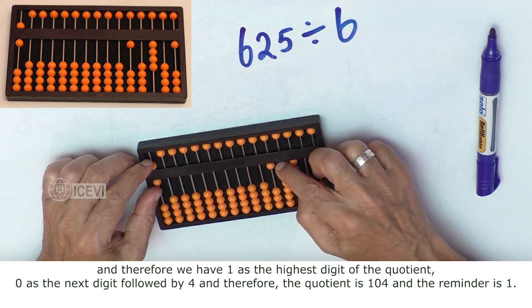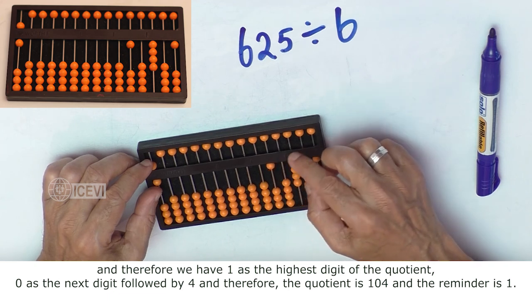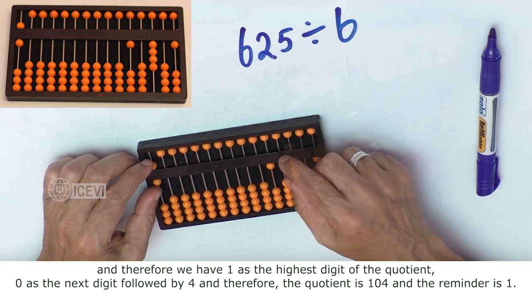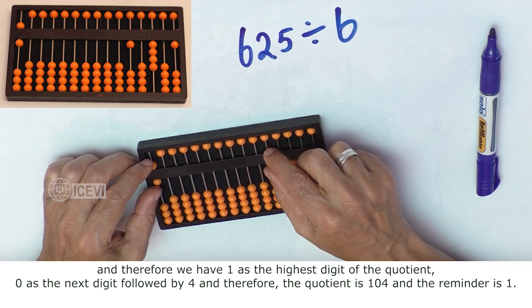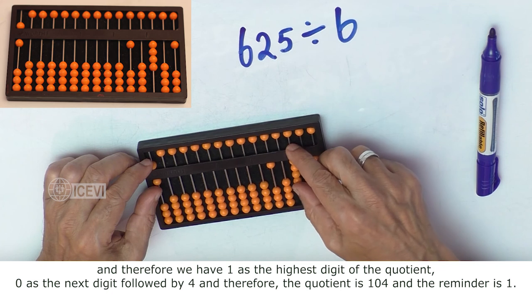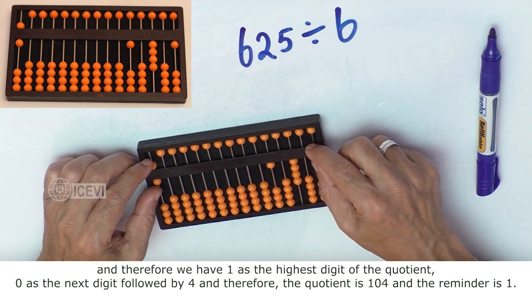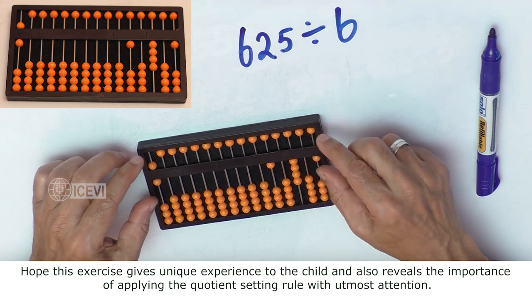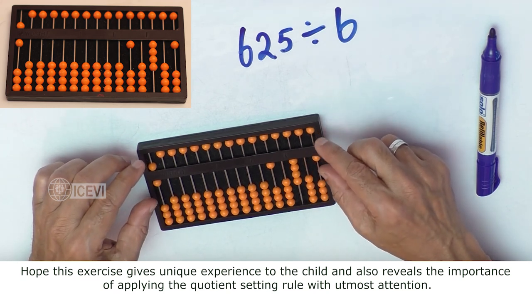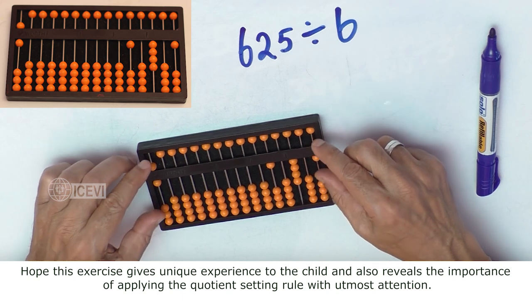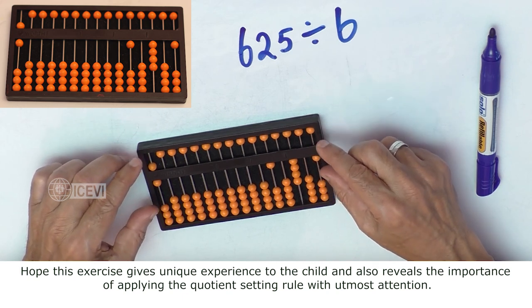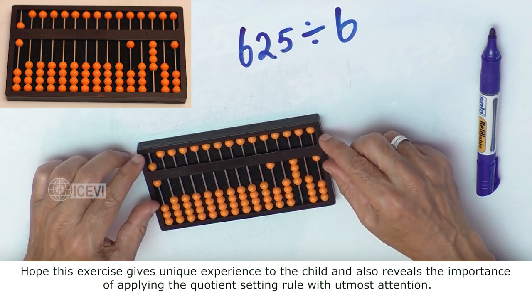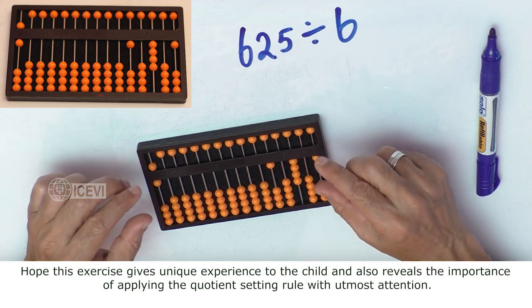Therefore the quotient is 104 and the remainder is 1. Hope this exercise gives unique experience to the child and also reveals the importance of applying the quotient setting rule with utmost attention.